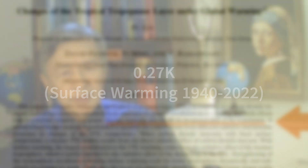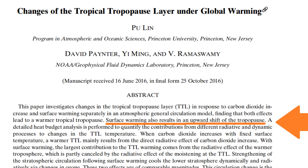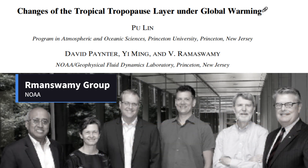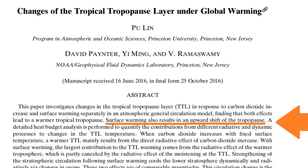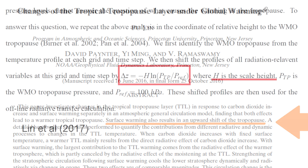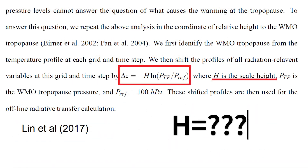This is another research paper published in 2016 by Lin and members of the Ramaswami group from NOAA. Although the upward shift of the tropopause due to global warming was mentioned, no quantitative explanation was provided.